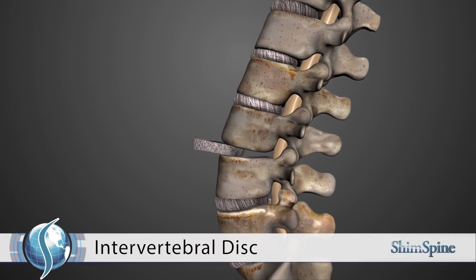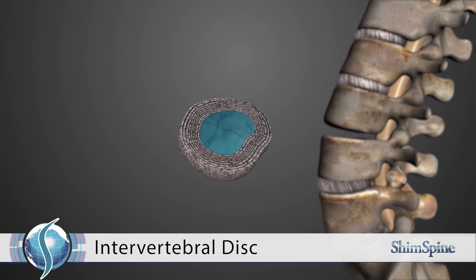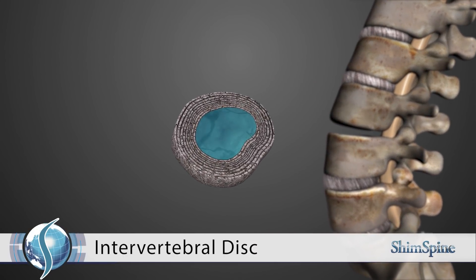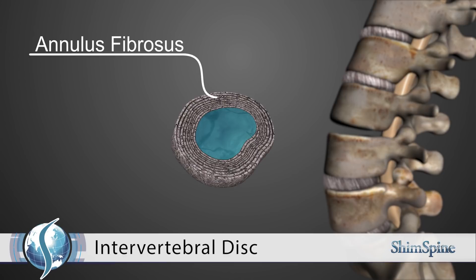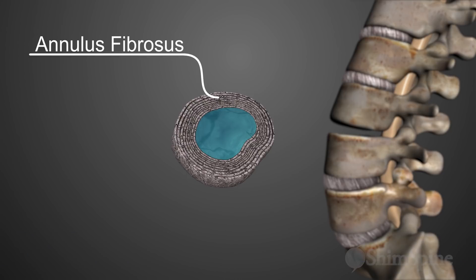The intervertebral disc is made of two main components. The outer component of the disc is called the annulus fibrosis. It's a very tough structure designed to be a ligament and designed to hold the soft inner component, the nucleus pulposus, in place.